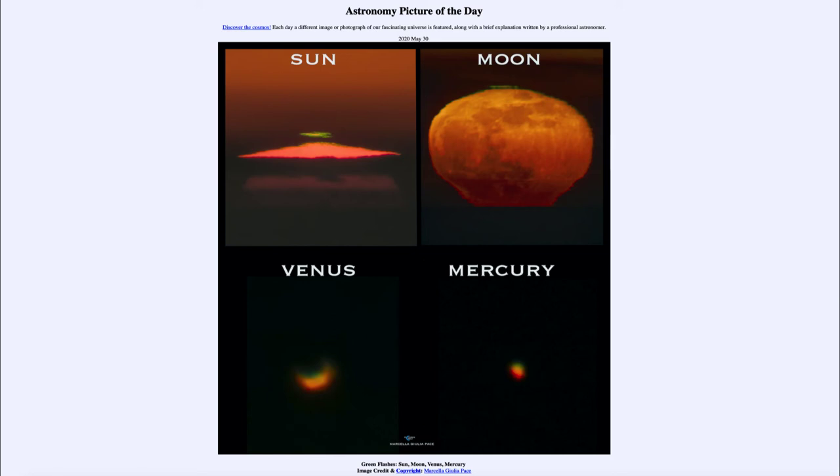Now this is seen most often with the sun as it is certainly the brightest of these objects, a little less frequently with the moon, but very difficult to catch with Venus and Mercury because they are so much fainter. But when you have them low in the atmosphere as we do right now, we were able to get images like this.